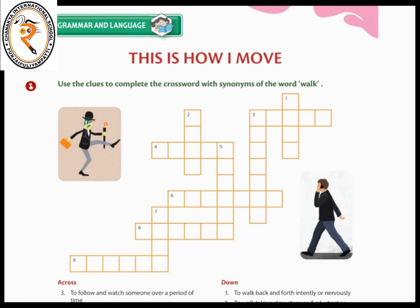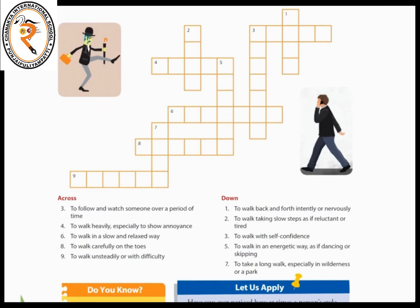Here a crossword game is given for you. You have to use the clues given below and find out the words in the word box. The first clue is: to follow and watch someone over a period of time.